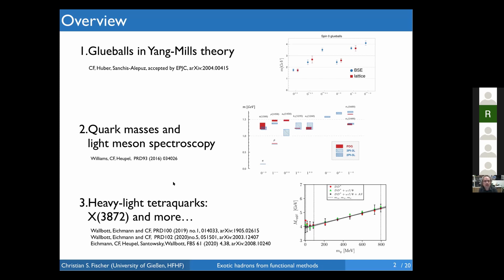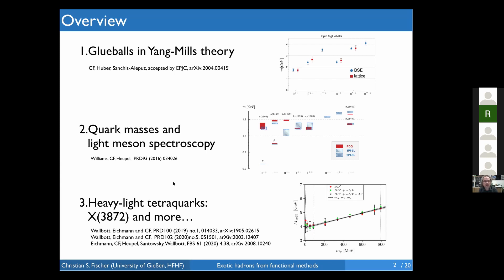My talk is divided into three parts. I will start with pure Yang-Mills theory and discuss some recent results on glueballs, and also discuss the issue of truncation schemes. In the brief second part I'll go to quark masses and light meson spectroscopy. Then in the third part I come to the topic of heavy quarks — in particular heavy-light tetraquarks, the X(3872) and others.